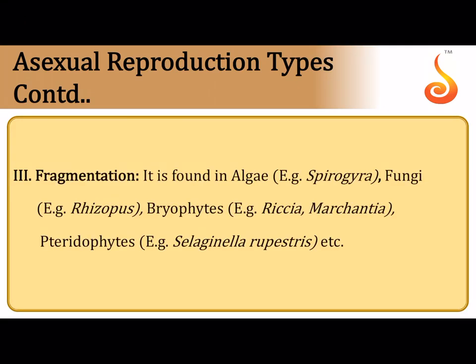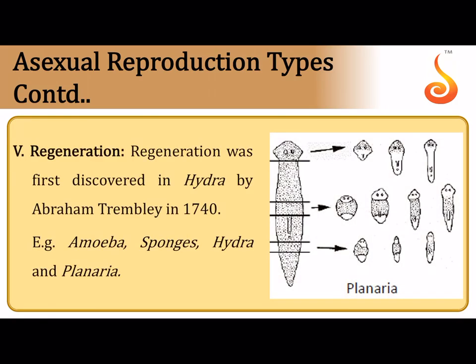Fragmentation is when the body divides into many fragments and each fragment grows into an independent organism, as in algae, bryophytes, and some higher vascular plants like pteridophytes. Regeneration, as seen in planaria and hydra, is where if you cut the body into fragments each develops into a completely regenerated new organism. It was first studied by Abraham Tremblay in 1740, and is reported mostly in sponges, hydra, and planaria.